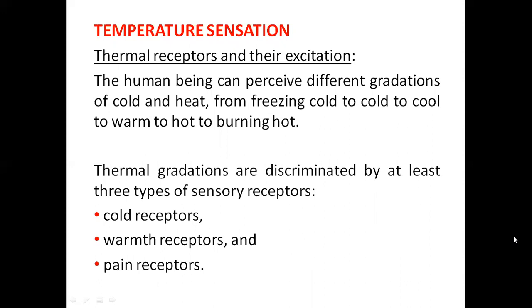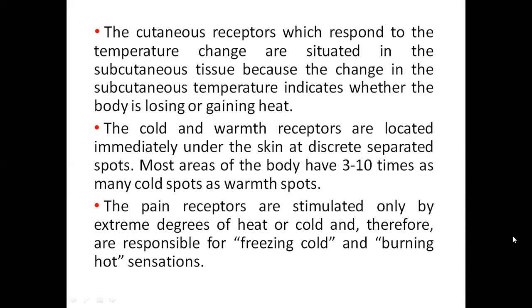Coming to the temperature sensation: thermal receptors and their excitation. The human being can perceive different gradations from freezing cold, cold, cool, warm, hot to burning hot. These gradations are discriminated by at least three types of sensory receptors: cold receptors, warmth receptors and pain receptors. The cutaneous receptors responding to temperature change are situated in the subcutaneous tissue because the change in subcutaneous temperature indicates whether the body is losing or gaining heat.